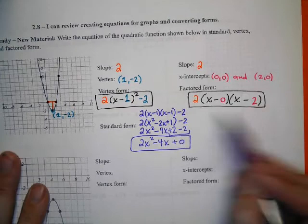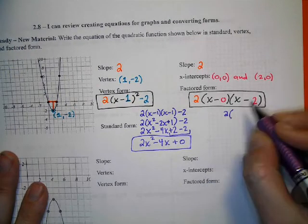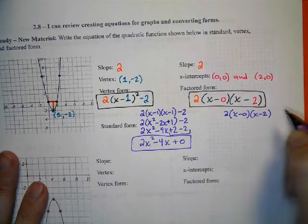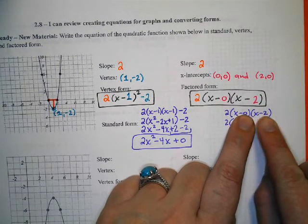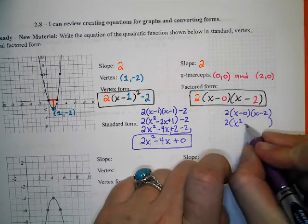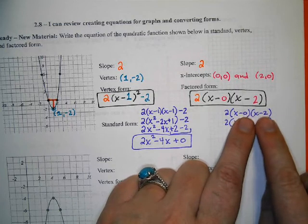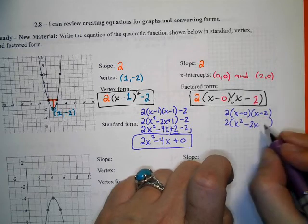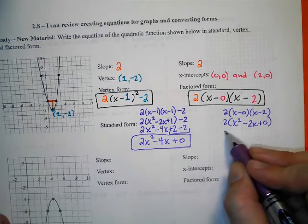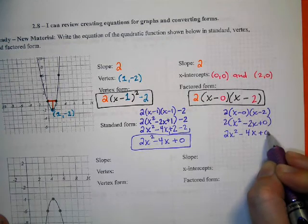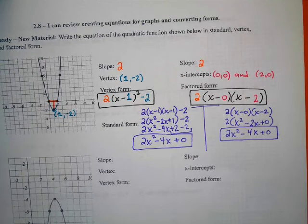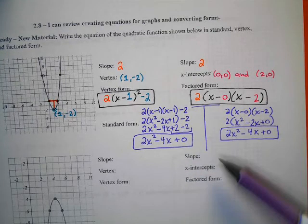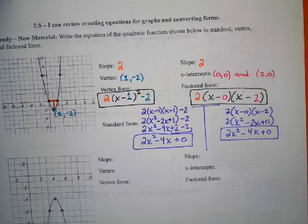What if I multiply these together instead? What if I build from factored? I would have a 2. I would have x². What happens when I add 0 and a -2 together? What happens when I multiply them? What's 0 times 2? 0. Then when I distribute, 2x² - 4x + 0. You might pick either method to find standard. It does not matter which one. They both give you the exact same answer as you're just distributing it.